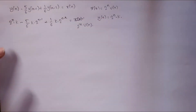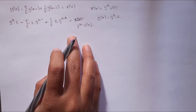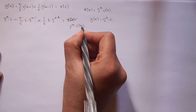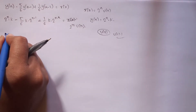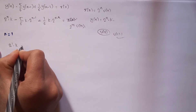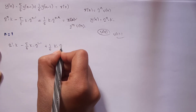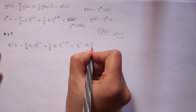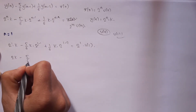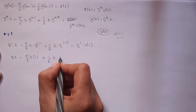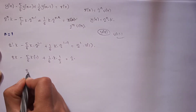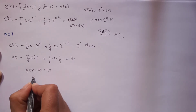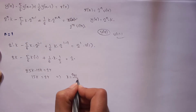Substituting n = 1: 2k minus (5/6)*k*2^0 plus (1/6)*k*2^(-1) equals 2*u(1). This gives 2k minus (5/6)k plus (1/12)k equals 2. Solving: 25k minus 10k equals 24, so 15k = 24, giving k = 24/15.